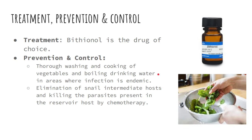For treatment, prevention, and control: the drug of choice is bithionol. Prevention includes thorough washing and cooking of vegetables, boiling drinking water in endemic areas, elimination of the first intermediate host (the snail), and killing the parasite in reservoir hosts through chemotherapy. Since Fasciola hepatica and gigantica are acquired through ingestion of aquatic vegetation containing metacercaria, vegetables and water sources must be properly cleaned.